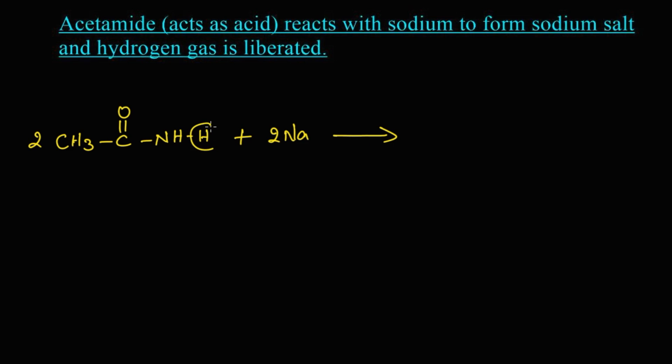What happens? From one molecule one hydrogen and from two molecules two hydrogen, that is this hydrogen gas is liberated. The remaining sodium will replace the hydrogen, so we get two molecules of CH3-C double bond O-NH-Na. What is the name of this compound? This is sodium acetamide. Let's write the name for these structures.